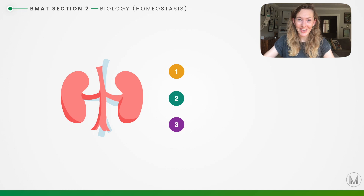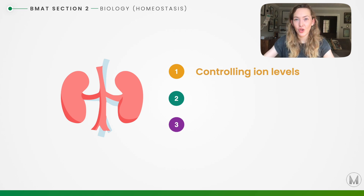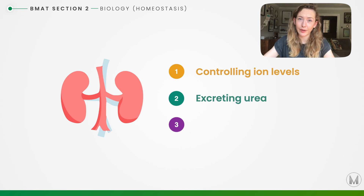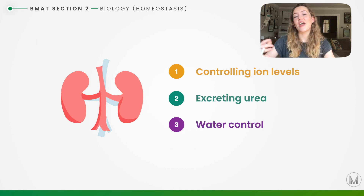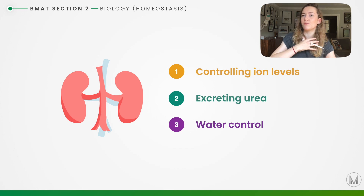What are the three roles of the kidneys? First, they control ion levels — controlling what ions are lost in the urine. Second, they break down toxic urea, which is produced by the breakdown of proteins in the liver; the kidneys filter it out of the blood to be excreted in urine. Third, they control how much water is lost in the urine by responding to ADH and controlling how much water is reabsorbed back into the body.